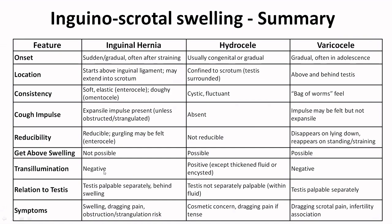Transillumination is a test classically done in hydrocele and is diagnostic of hydrocele unless there is thickened fluid or it is encysted. The testes is usually palpable separately unless it is a complete hernia, whereas the testes is not separately palpable in cases of hydrocele. Usually patients with inguinal hernia have a dragging pain, obstruction symptoms, or strangulation symptoms, whereas hydrocele is more of a cosmetic concern with pain only if it is a tense large hydrocele.